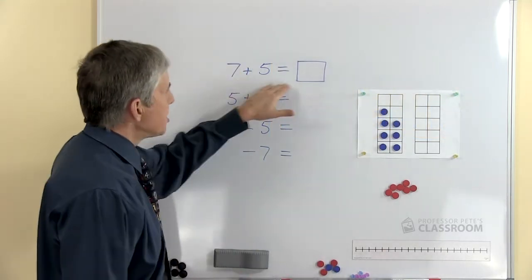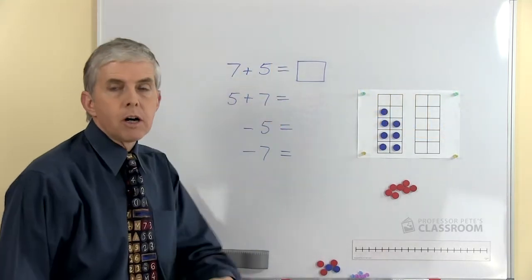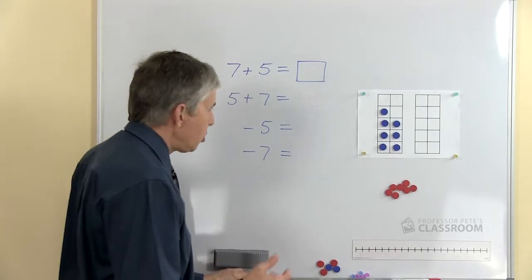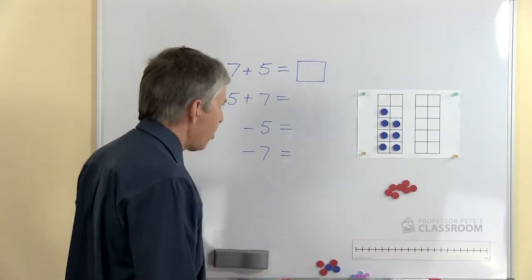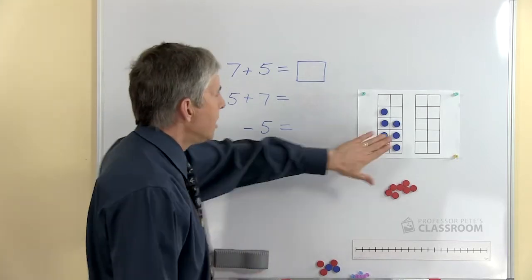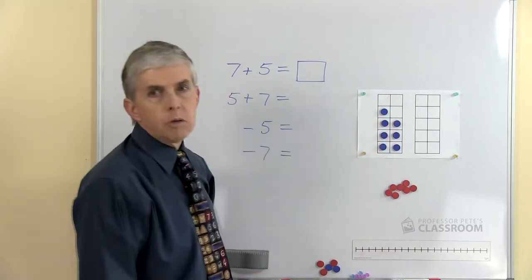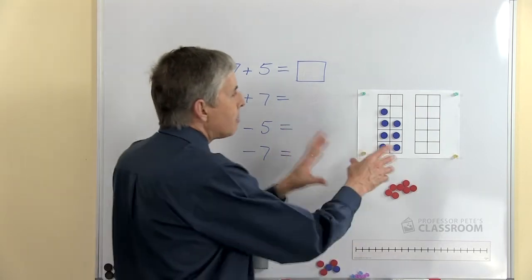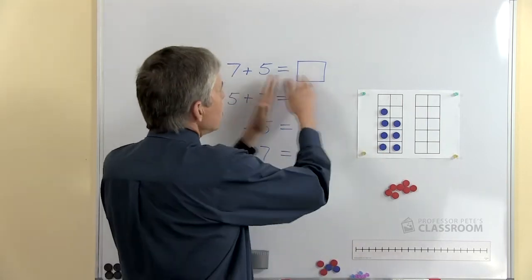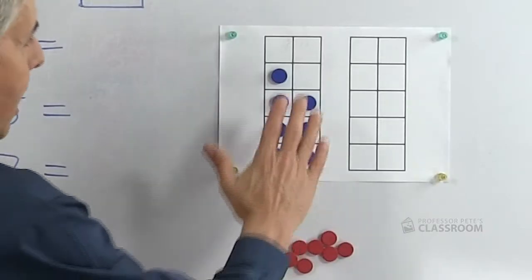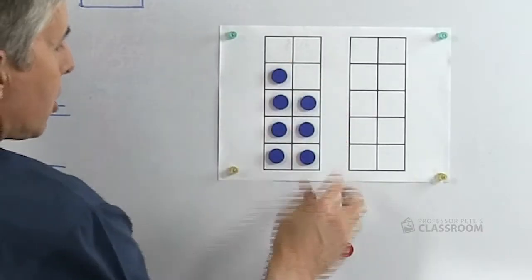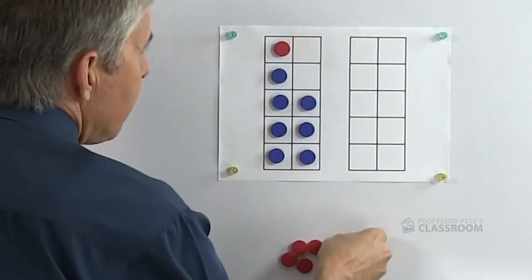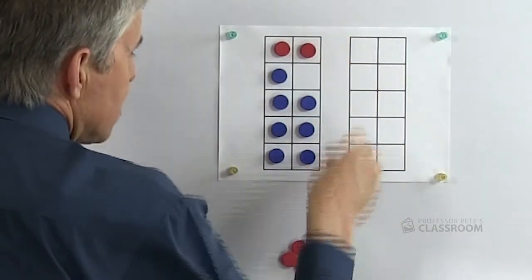We're going to start with this question: 7 plus 5 equals something — hopefully you already know the answer to that. Let me show you with a 10-frame. This is a double 10-frame because of course this is more than 10. So I have seven blue counters — let me add five more red ones.